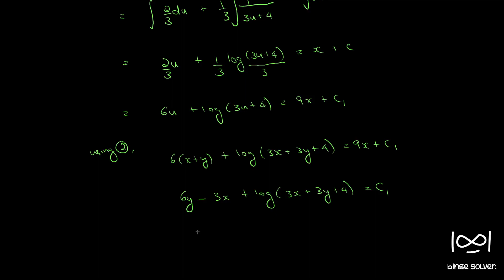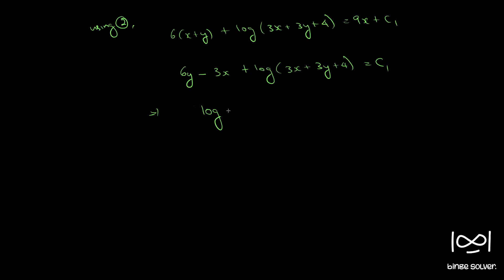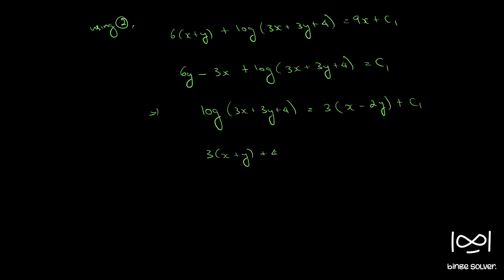So that becomes log of 3x plus 3y plus 4 equal to, taking common factor of 3, 3 times x minus 2y plus c1. Taking e to the power on both sides, we get 3x plus 3y plus 4 equal to e to the power of 3 times x minus 2y, and e raised to c1 becomes another constant c2.